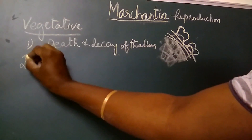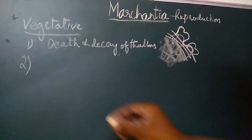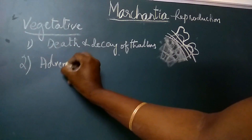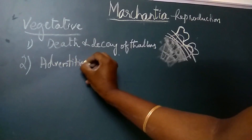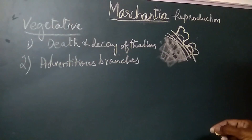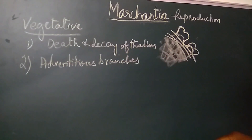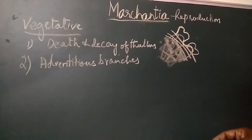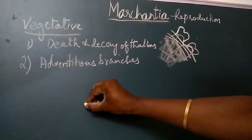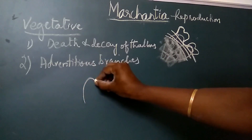The second method of vegetative propagation is by the formation of adventitious branches. In some species of Marchantia, adventitious branches are seen on the ventral surface of the thallus or gametophyte. These branches, on separation, develop into independent Marchantia thalli.